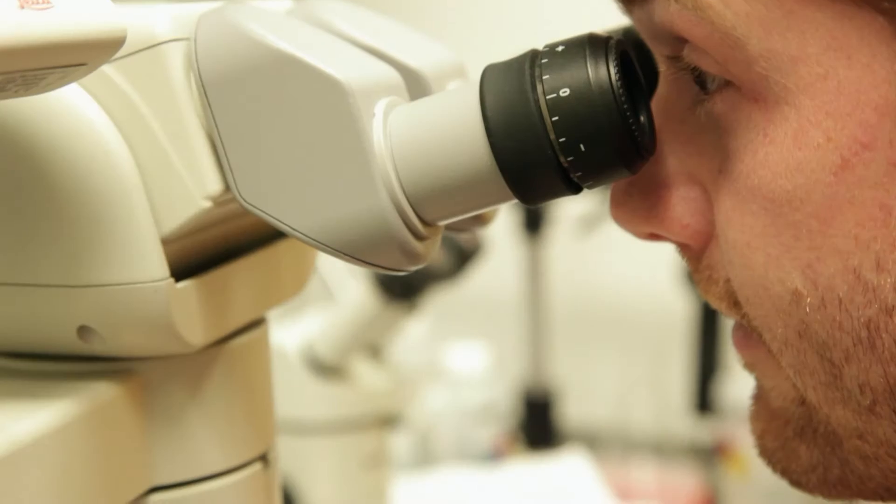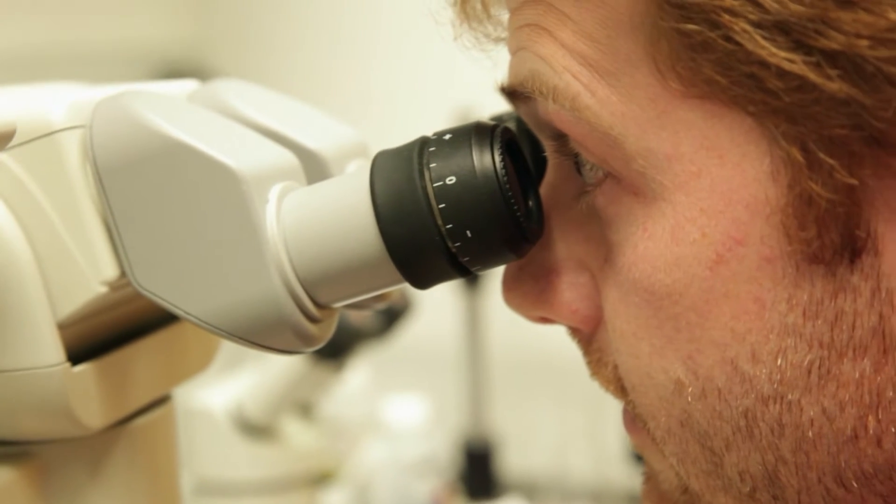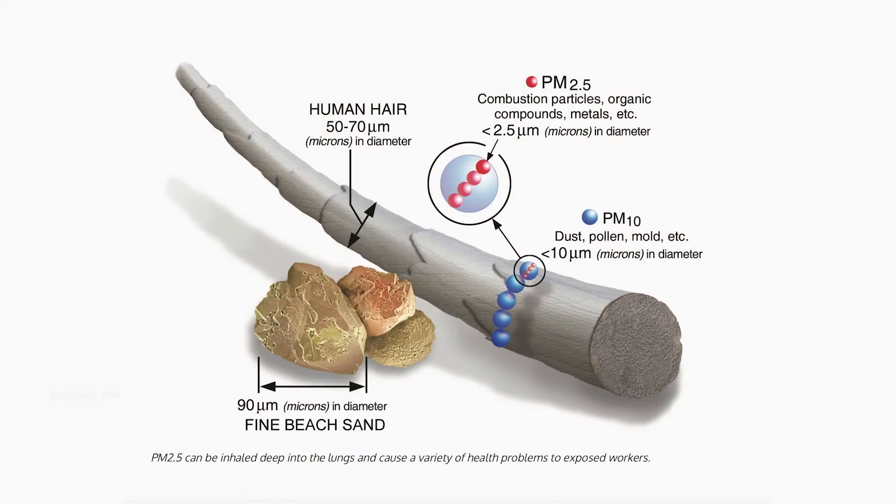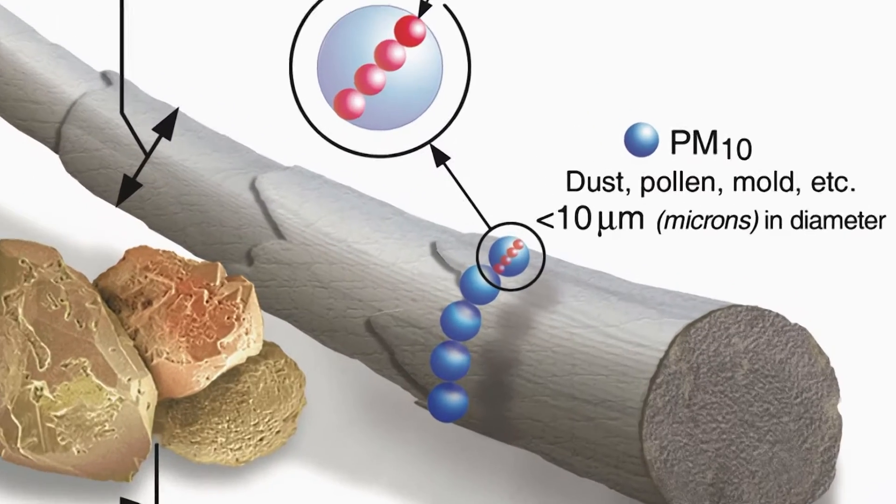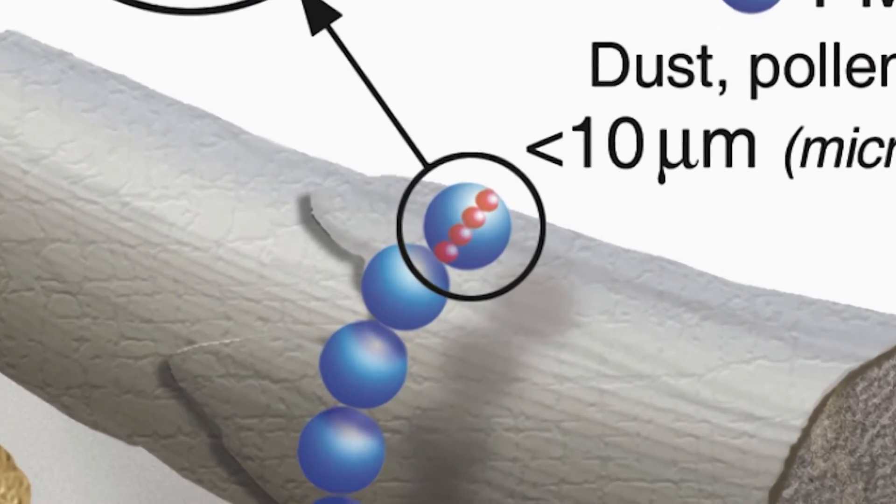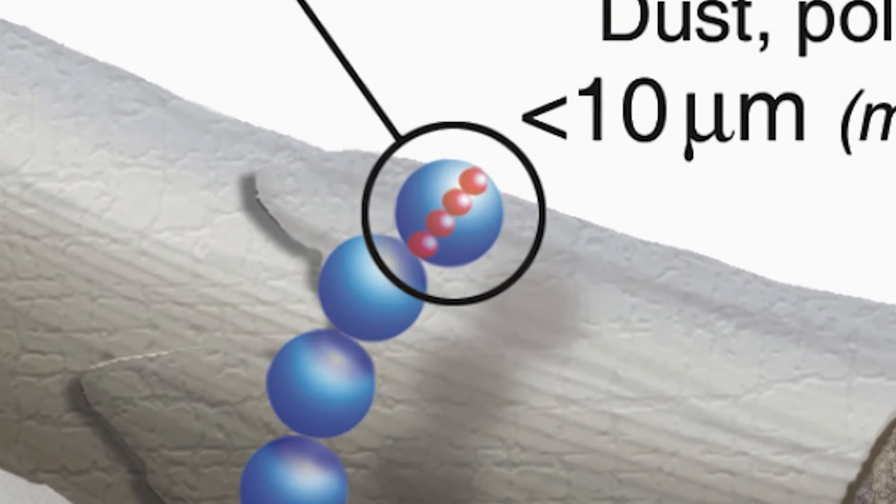Simply from exposure to PM 2.5 or particulate matter that's 2.5 microns and smaller. A gray human hair is at least 50 microns wide, and a particle of dust is 10 microns wide. Smoke particles are even smaller.